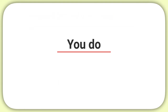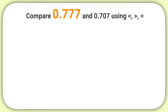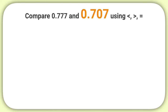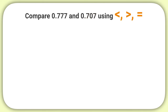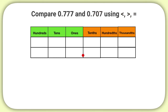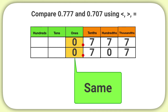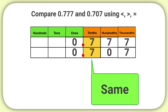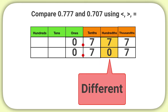Now it's time for you to practice on your own. Compare 777 thousandths and 707 thousandths using the less than, greater than, or equal to symbol. First, I can place the numbers in the place value chart and make sure that the decimals are lined up. Starting in the ones place, I see that they both have the digit 0. Since the zeros are equal in value, I'll move to the right and look at the tenths place. Both numbers have a 7 in the tenths place, so I move to the hundredths place. I see that one number has a 7 in the hundredths place and the other has a 0.